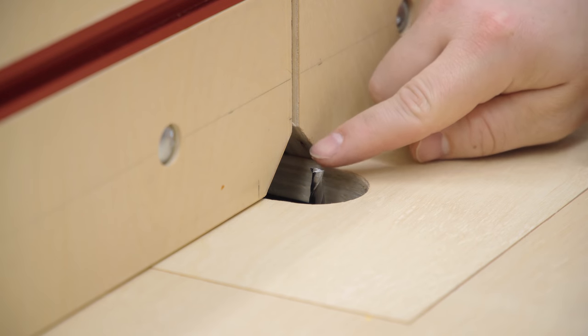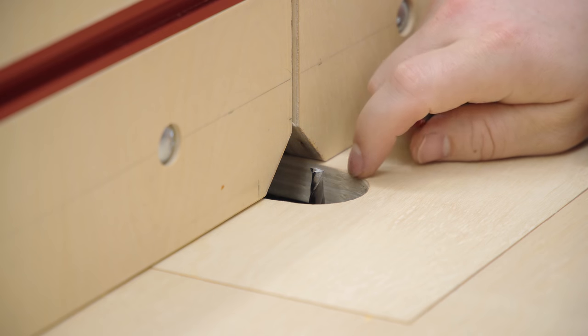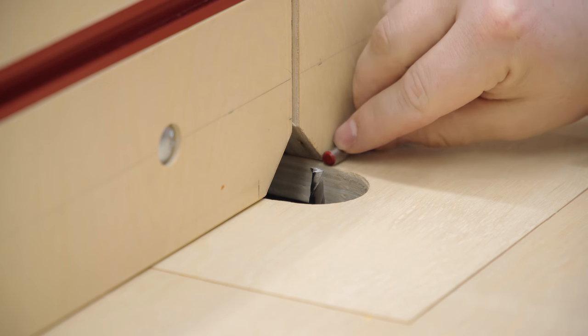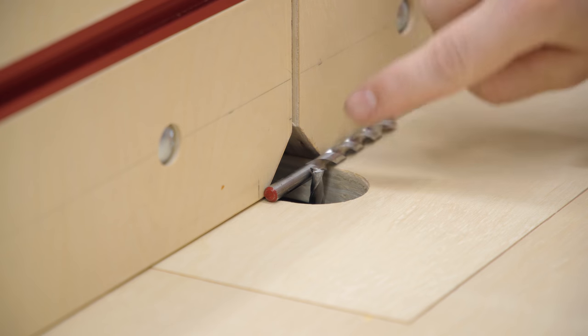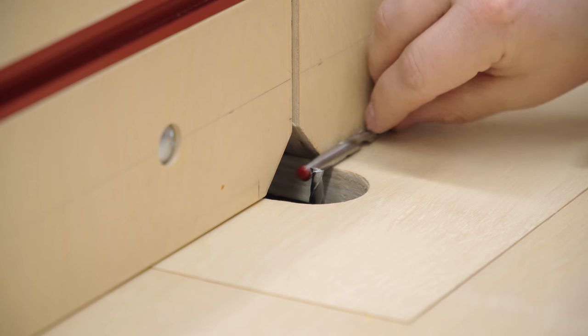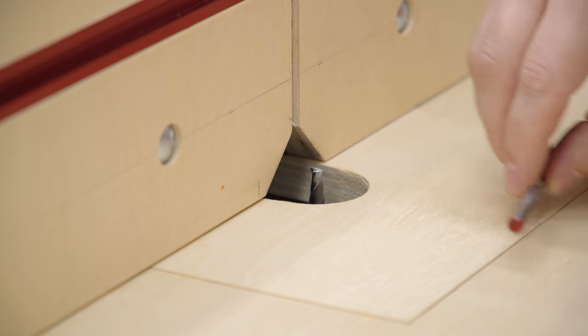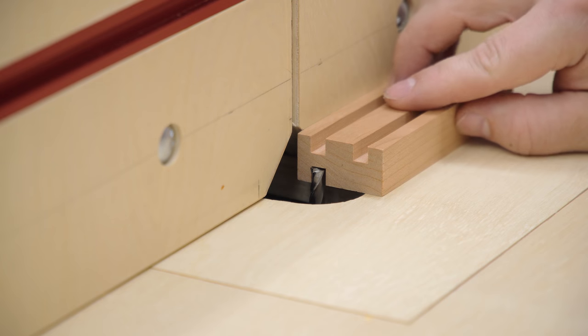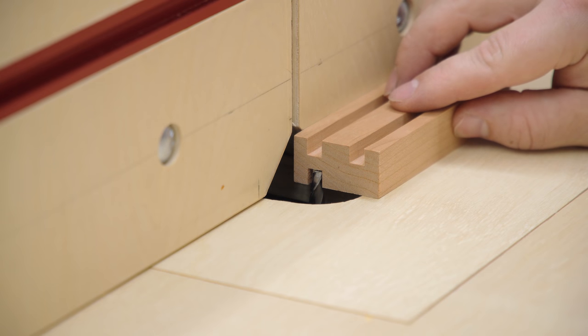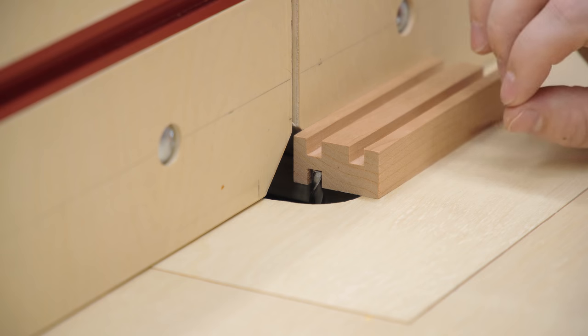Here at the router table I have a quarter inch spiral up cut router bit installed, positioned exactly one quarter of an inch away from the fence. I'm using a drill bit to confirm this. I also have the height set at one quarter of an inch, which establishes a groove that is one quarter of an inch away from the fence, one quarter of an inch wide, and one quarter of an inch deep, actually just a tiny bit more than one quarter of an inch deep.